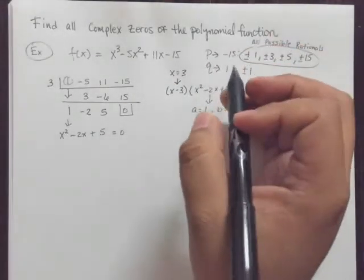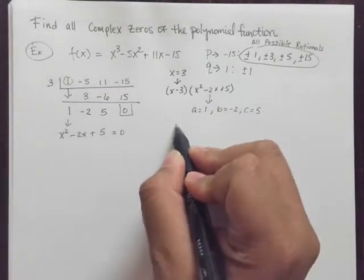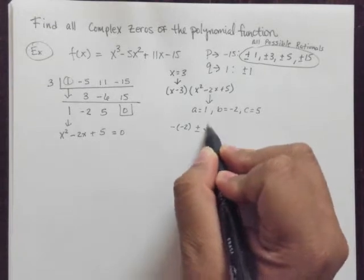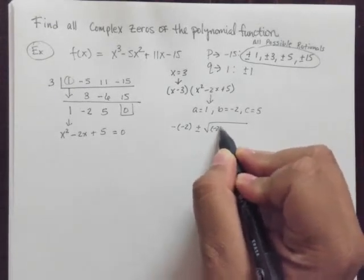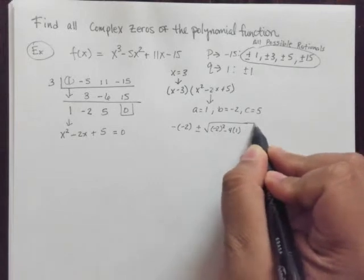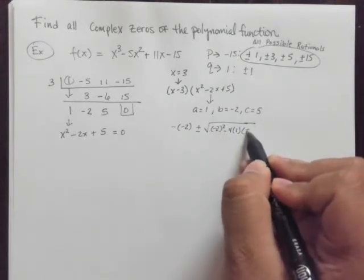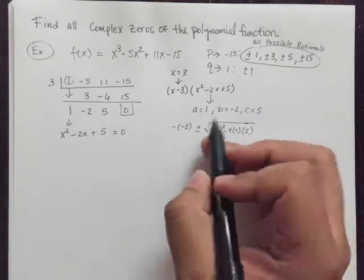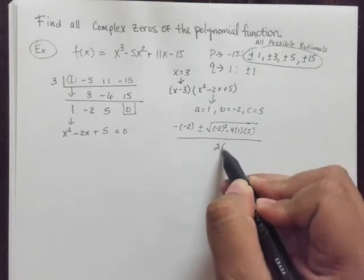So there we have that. And we're going to take opposite of b, so opposite of negative 2, plus and minus the square root. We have negative 2 squared minus 4 times 1 times 5. So 4ac all over 2a, so 2 times 1.